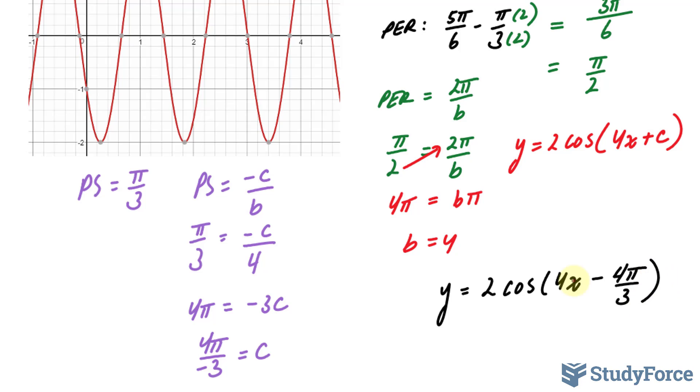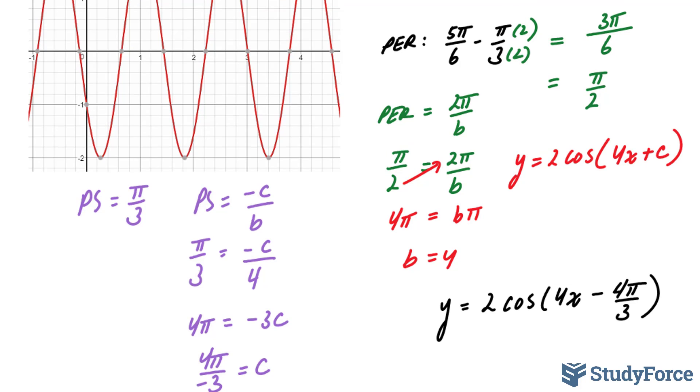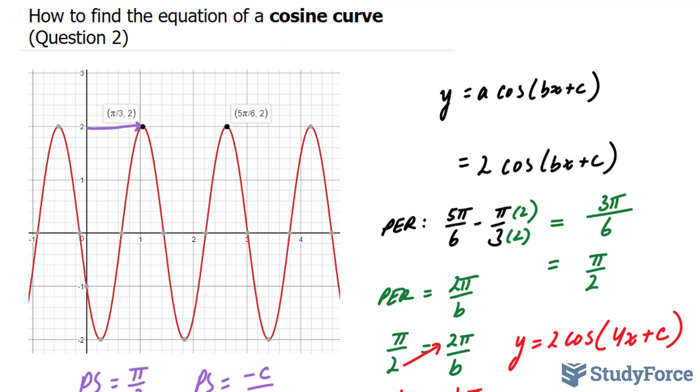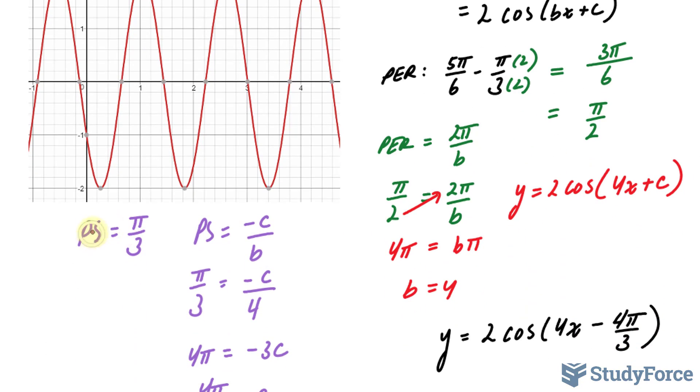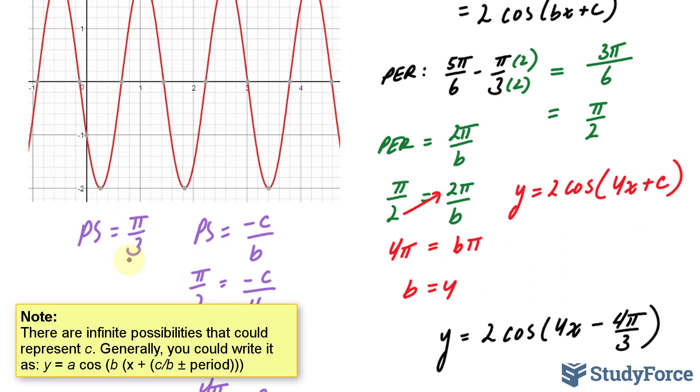Before we conclude, a lot of students may get a different c value, and that all depends on how you perceive the phase shift. The way I saw it was that my cycle started here and ended here. But if you decided that you wanted this to be your phase shift, then you would assign 5 pi over 6 as your phase shift and then solve for c. Obviously that would give you a different c value. Any variation you choose, as long as it's consistent with the wave, is correct.